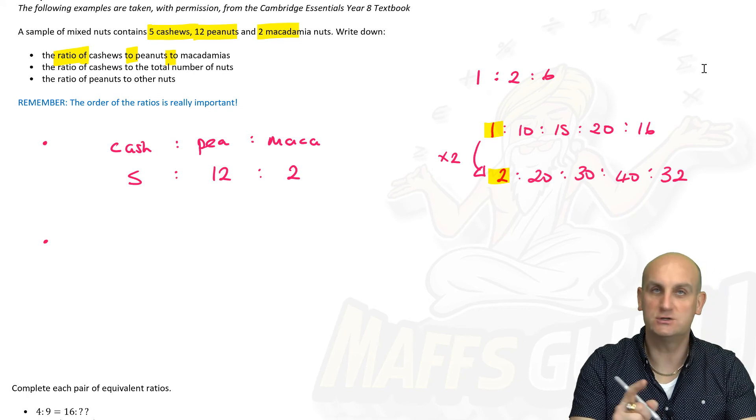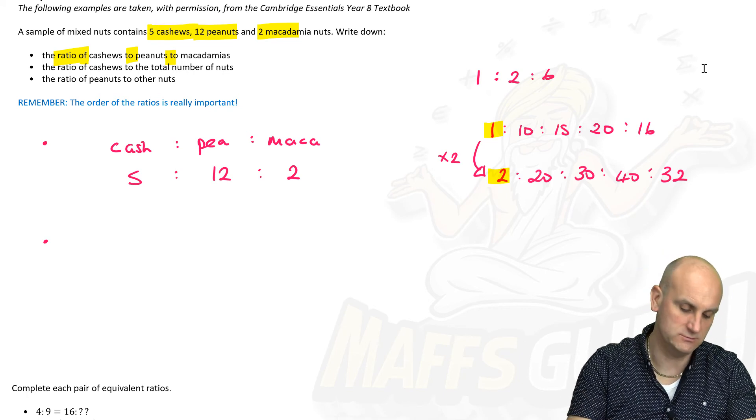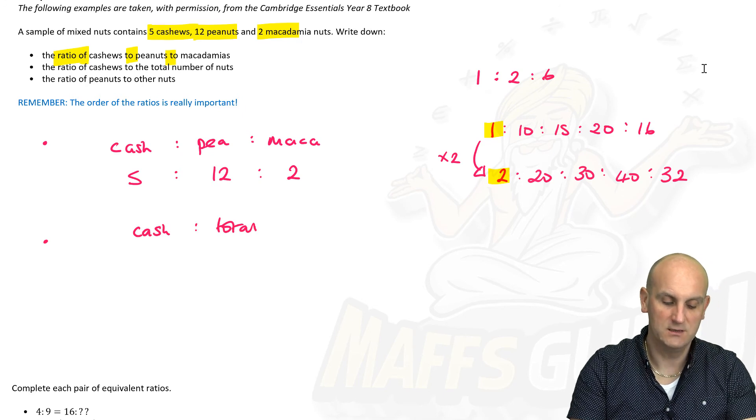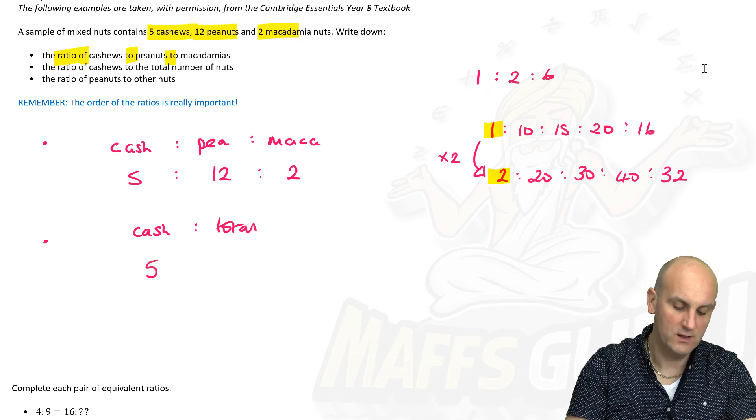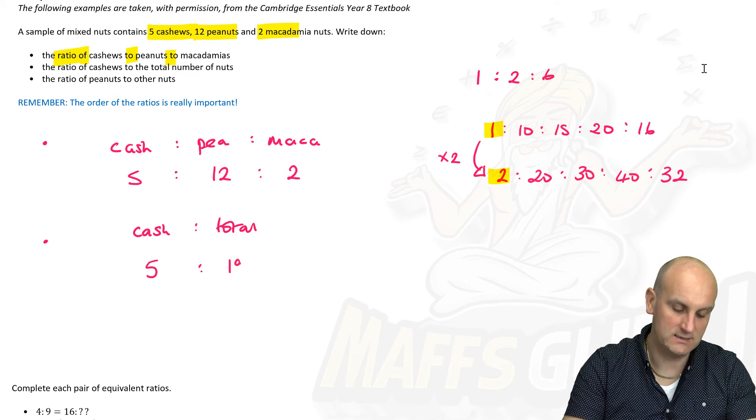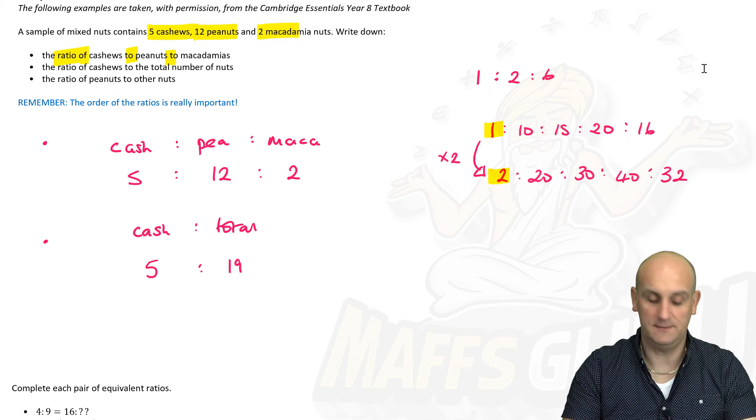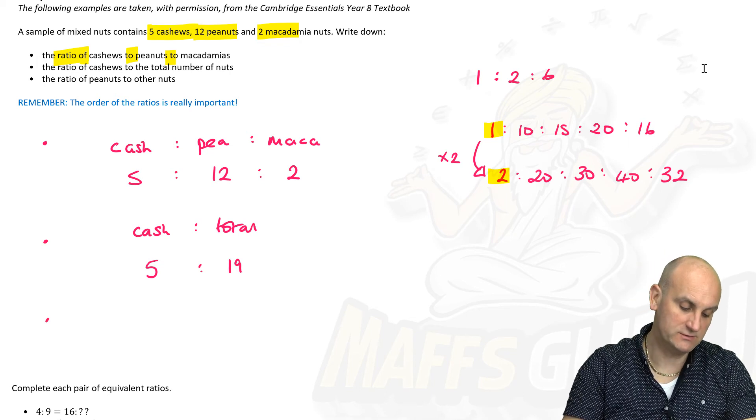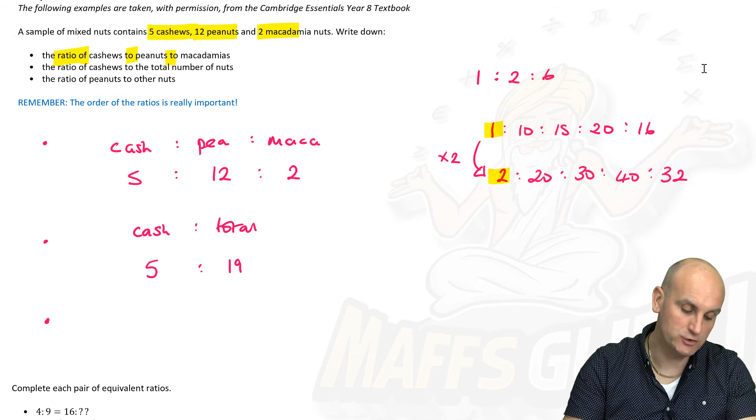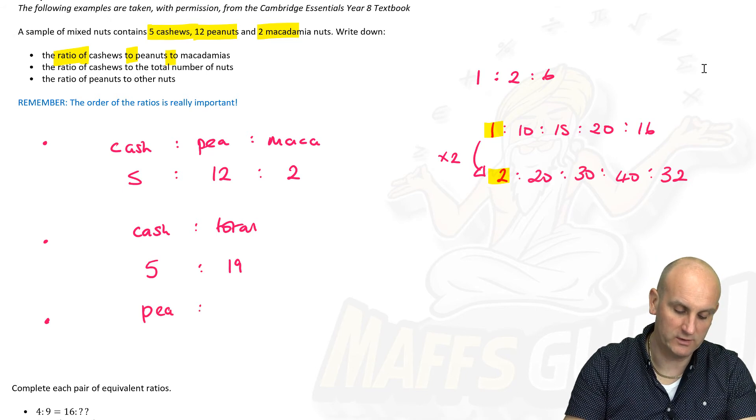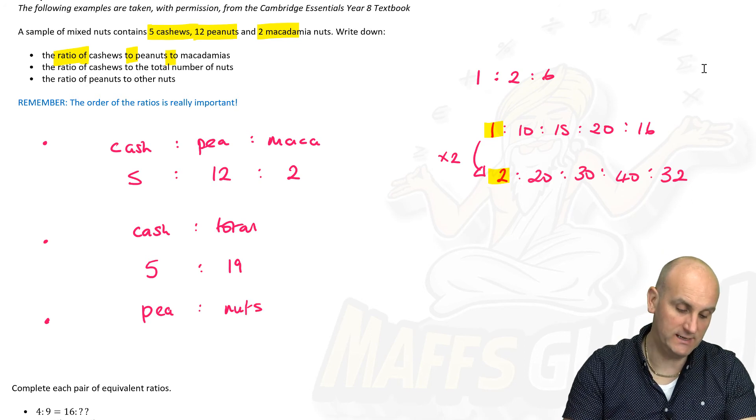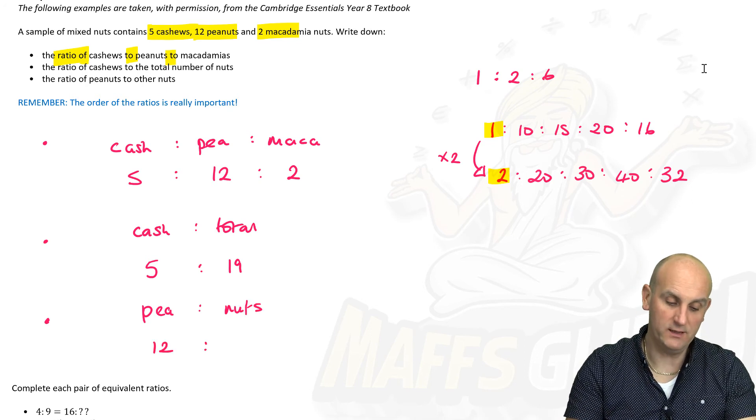Let's look at the second dot point. The ratio of cashews to the total number of nuts. Oh, so cashews to the total number of nuts. Cashews, there were five, but how many nuts were there in total? Twelve plus five is seventeen, eighteen and nineteen. Five to nineteen. All I'm doing here is just reading the question, I'm putting dots in the right place.